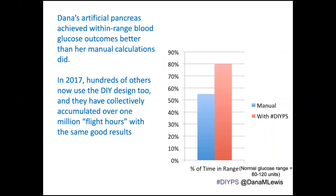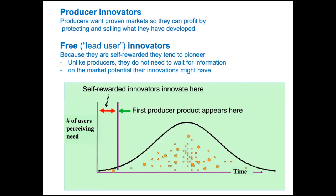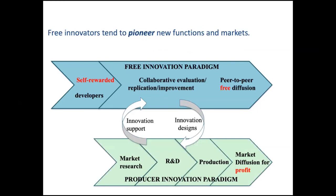Dana was brave enough to actually do it - she hooked it all up and found that it really worked, keeping her blood sugar better in range than her manual methods. In 2017, hundreds of others then adopted the DIY design, and now today thousands have. This is user innovation: the user - Dana, her husband, and others who joined - pioneered the innovation. The companies didn't want to, for various reasons we don't have to get into.